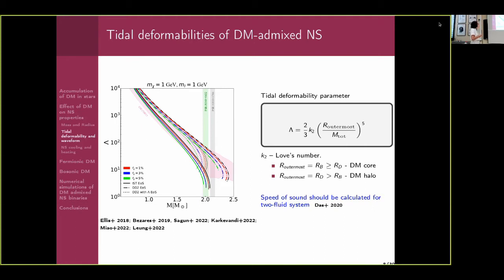From the plot, we see three different equations of state: the IST equation of state — which stands for induced surface tension — and the DD2 equation of state, including a hyperonic version. Looking at three realistic equations of state with fixed dark matter fractions of one, three, and five percent, we see that for all equations of state we have a softening of the equation of state, and tidal deformabilities are decreasing with increasing fraction of dark matter.